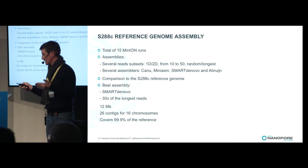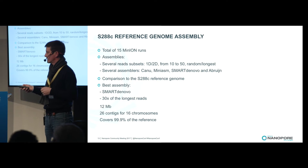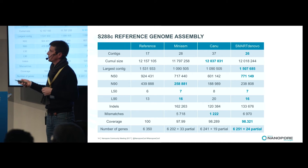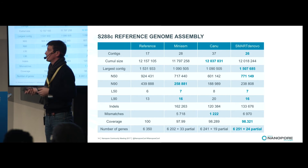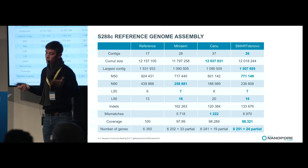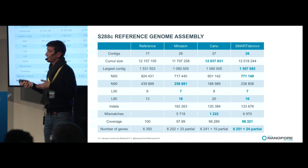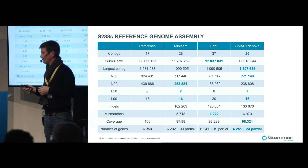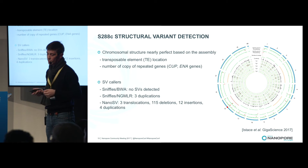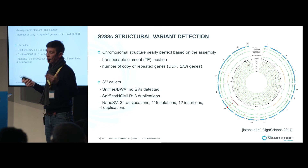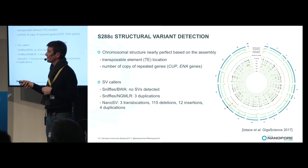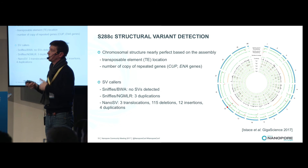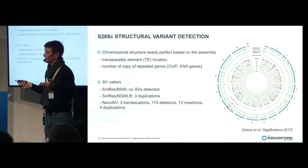We tested the different assemblers, and as you can see in this table with the different parameters, the best in this case was SMARTdenovo. But obviously, each time you have a subset of data you should try different assemblers, because the output can be really different. At the same time, we looked at structural variants — in this case we should detect no structural variants compared to the reference. Based on the assembly, the chromosomal structure is nearly perfect. We can detect transposable element copy number variation and repeated genes.